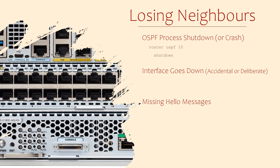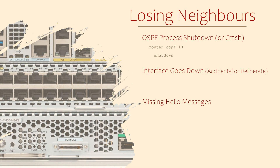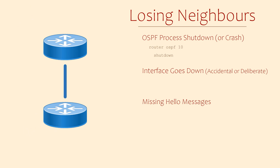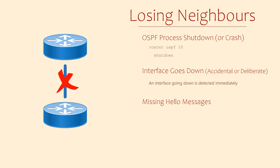Although rare, it's also possible that the OSPF process could crash — if so, you should log a ticket with Cisco. Rebooting the router will also cause the OSPF process to stop. Interfaces going down is a different story: this could happen when we shut down an interface or when a link fails. Imagine two routers directly connected with an OSPF adjacency up — if the link fails, the interfaces on both routers go down, both routers immediately know the neighbor is gone, the adjacency is lost, and OSPF needs to reconverge and find alternate paths if they exist.